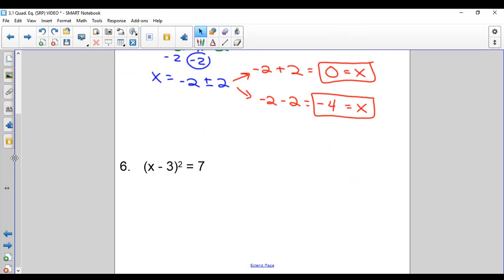Square root both sides since the square is by itself. X minus 3 pops out. Plus or minus square root of 7.